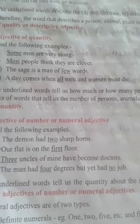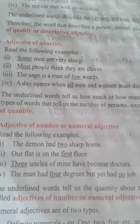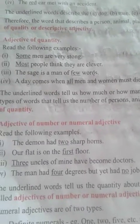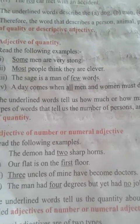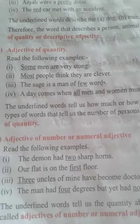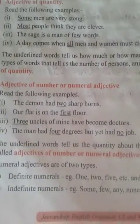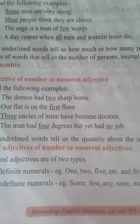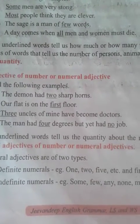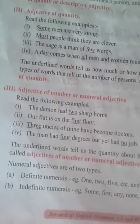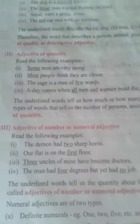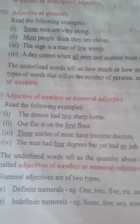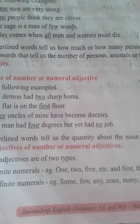Adjective of number or numeral adjectives. Read the following examples. The demon had two sharp horns. Our flat is on the first floor. Three uncles of mine have become doctors. The man had four degrees but had no job. The underlined words tell us the quantity about the nouns spoken of. Hence, they are called adjectives of number or numeral adjectives. Numeral adjectives are of two types: definite numerals and indefinite numerals.